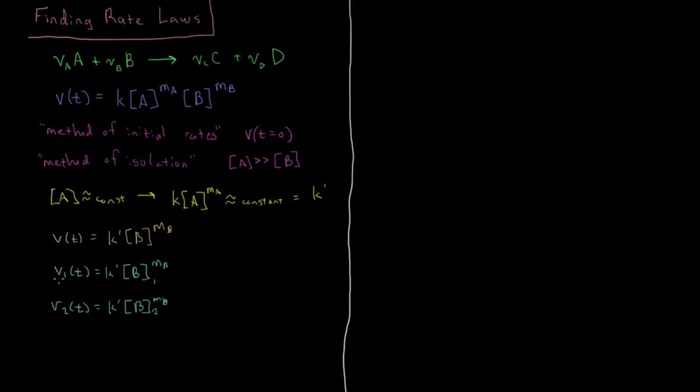We notice that we have K prime in both of these here. So if we divide both sides by their respective terms, then you have K' equals this divided by that, K' equals this divided by that. They're equal to each other through K prime. So what we have then is V1(t) over [B1]^MB equals V2(t) over [B2]^MB.